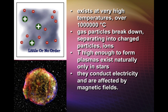And lastly, plasma. Plasma exists at very, very high temperatures. At these high temperatures, the gas particles break down, separating into charged particles or ions. Temperatures high enough to form plasma exist naturally only in stars. Since plasma is made up of charged particles or ions, they conduct electricity and are affected by magnetic fields.